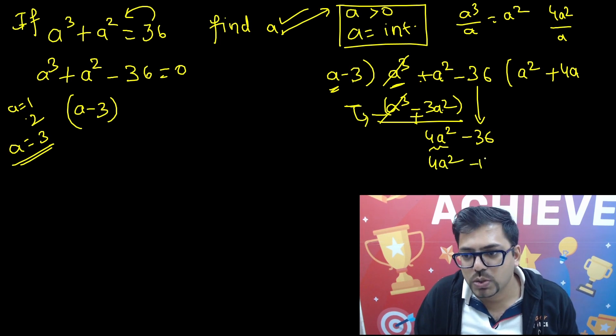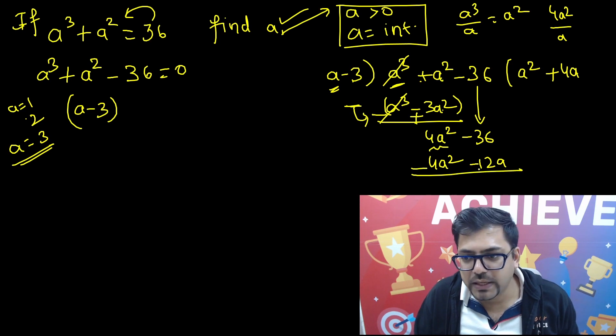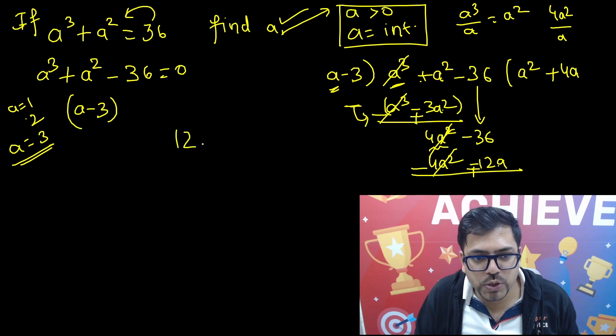Again the first term, 4a² divided with a we get 4a. So this is plus 4a. 4a multiplied with a gives 4a², and then 4a multiplied with minus 3 gives minus 12a. Now again reversing the sign, they get cancelled. You have got plus 12a.